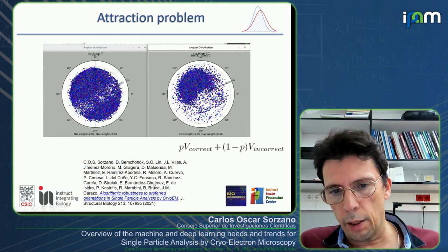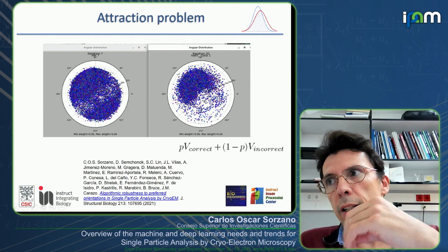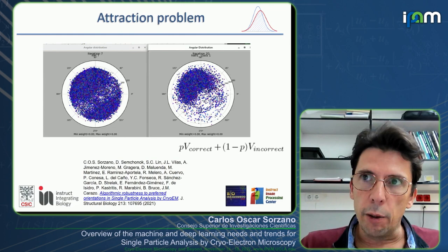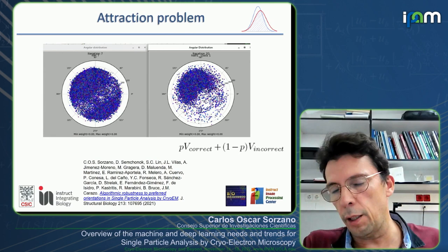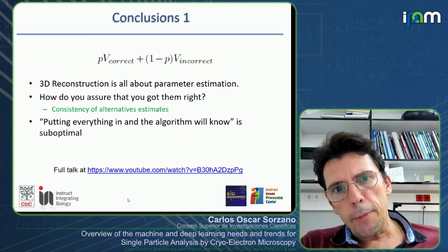This is what we call the attraction problem. When a direction or class starts to gain signal-to-noise ratio because it accumulates many particles, the background is averaged more, creating a lower barrier that attracts even more particles. This is mathematically justified in the corresponding paper.